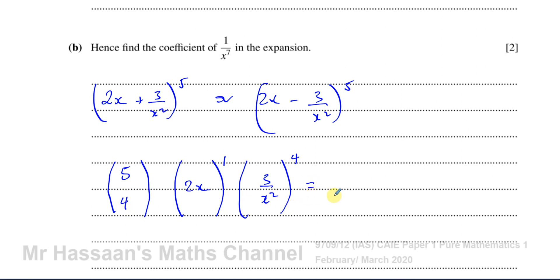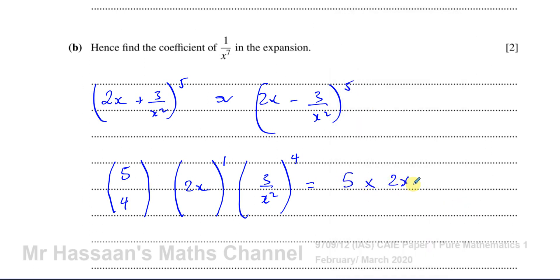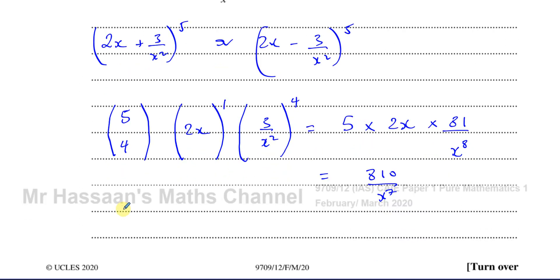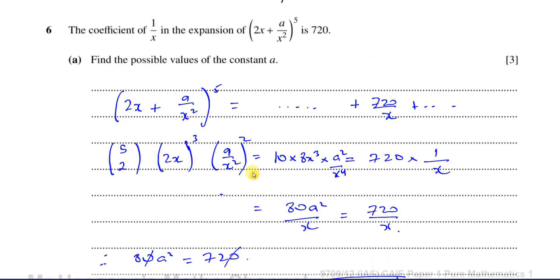So this is going to be 5C1 or 5C4 — it doesn't make any difference, they give the same result. 5C4 equals 5. Times 2x to the power of 1, which is 2x. Times 3 to the power of 4, which is 81, over x^8. So we get 5 × 2 × 81 = 810 over x^7. Be very careful — they only want the coefficient of 1/x^7. The coefficient of 1/x^7 is equal to 810. And whether a is positive or negative doesn't matter here since we're raising it to an even power.